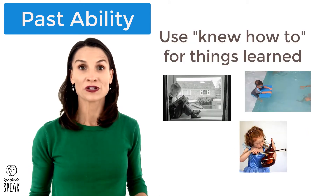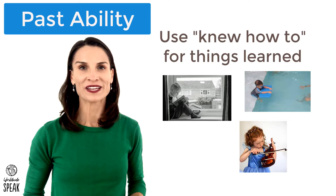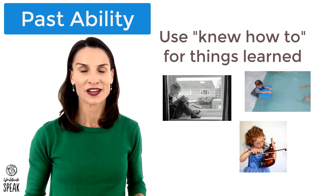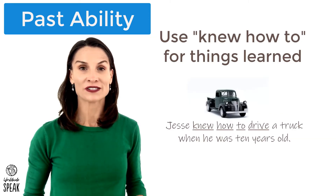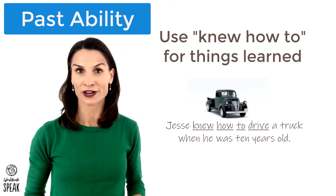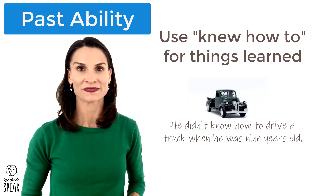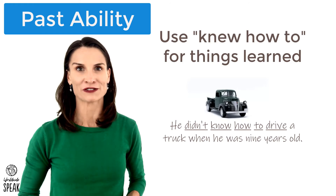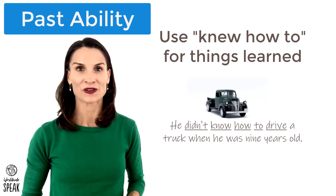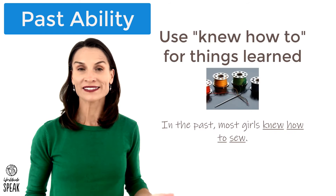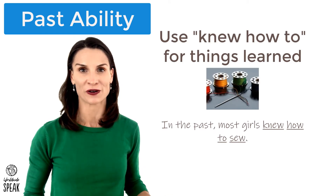We can also use knew how to for things that we learned how to do. For example, Jesse knew how to drive a truck when he was 10 years old. He didn't know how to drive a truck when he was nine years old. Or, in the past, most girls knew how to sew.